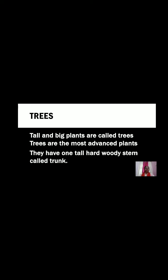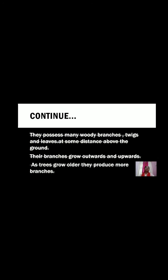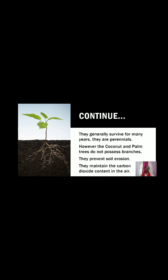Now let us learn about trees. Tall and big plants are called trees. Trees are the most advanced plants. They have one tall hard woody stem called a trunk. They possess many woody branches, twigs and leaves at some distance above the ground. Their branches grow outwards and upwards. As green trees grow older, they produce more branches. They are generally perennial, surviving for many years. However, the coconut and palm trees do not possess branches, but they are trees.